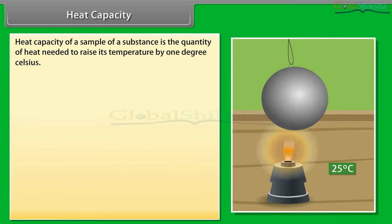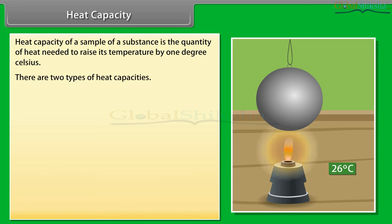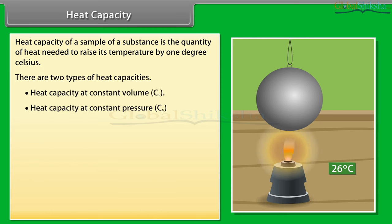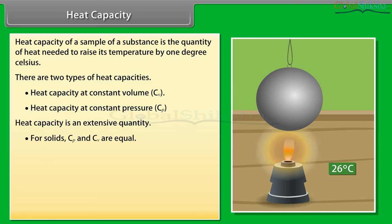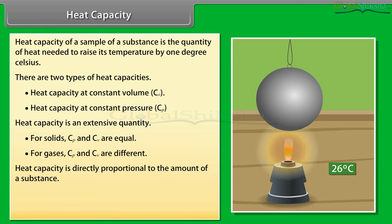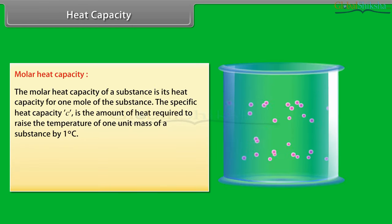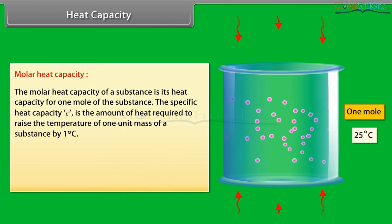Heat capacity of a sample of a substance is the quantity of heat needed to raise its temperature by 1 degree Celsius. There are two types: heat capacity at constant volume and heat capacity at constant pressure. Heat capacity is an extensive quantity. For solids, C_P and C_V are equal; for gases, C_P and C_V are different. Q = C_V × ΔT, where ΔT = T_f − T_i. The molar heat capacity of a substance is its heat capacity for 1 mole of the substance.